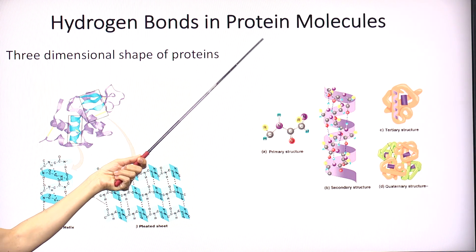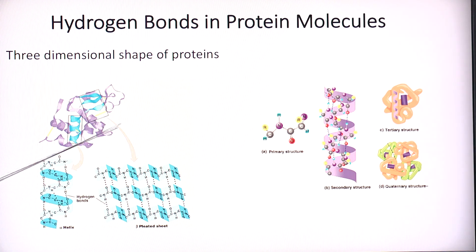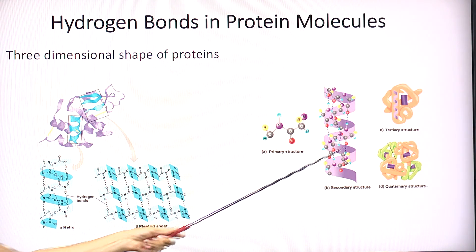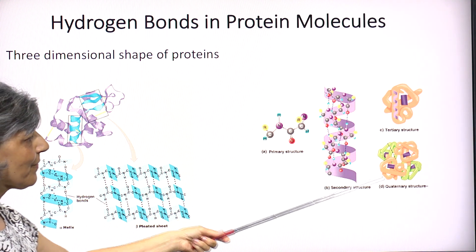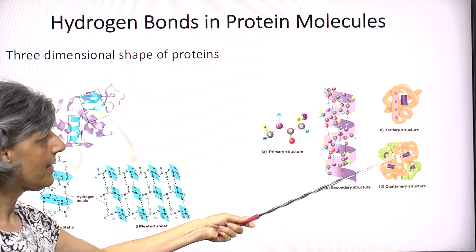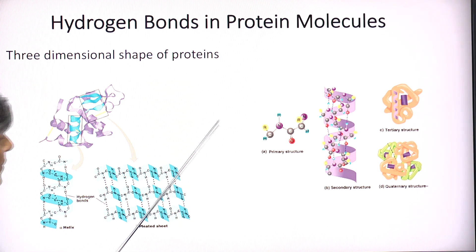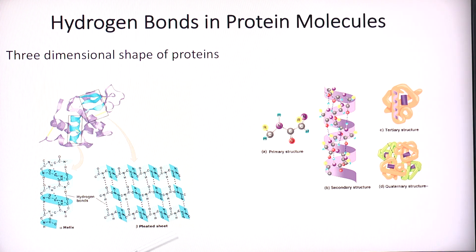In protein molecules, hydrogen bonding allows the protein to take a specific shape. Proteins are long strands of amino acids — like a long thread — but they can take three-dimensional shapes: they can form a pleat, and ultimately a very specific three-dimensional shape for a particular function. This three-dimensional shape is achieved through hydrogen bonding between the different parts of the amino acids.